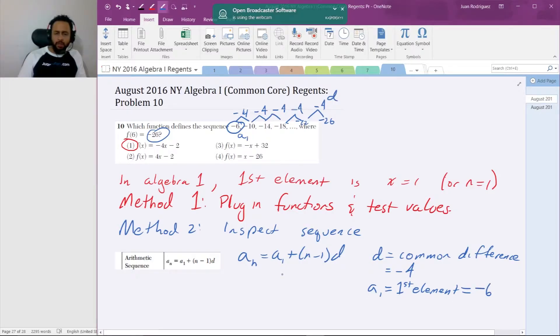So the sequence is a_n is equal to negative 6 plus n minus 1 times negative 4. In this case I'm going to switch it with x's because it's a function of x, so f of x is equal to negative 6 plus x minus 1 times negative 4.